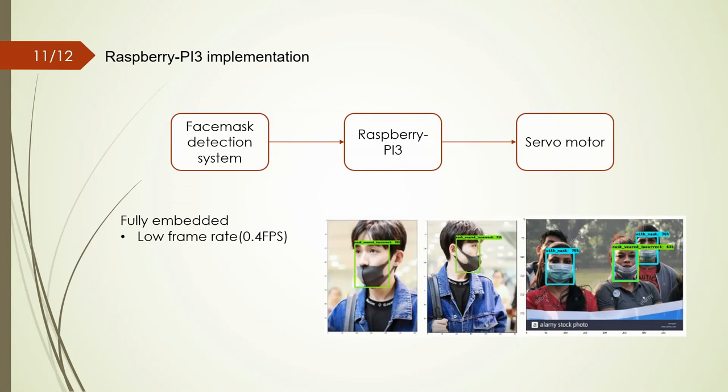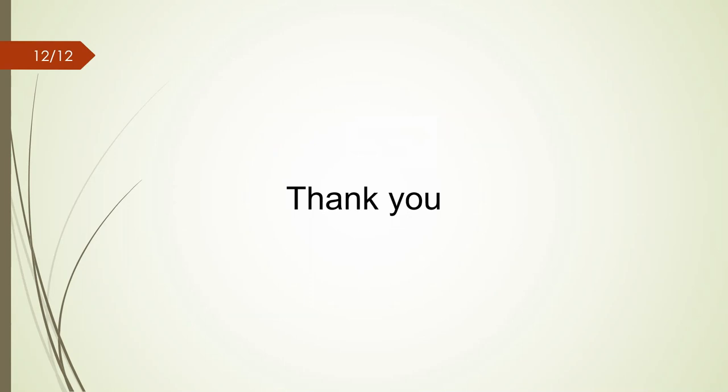So in the proposed system, an external system is used for image processing. And because of its high frame rate, the Raspberry Pi can apply some supplementary control commands to increase the system's reliability. Thank you for watching.